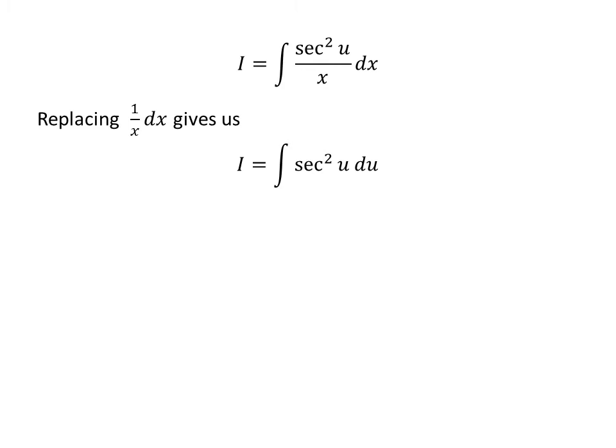So, I = ∫sec²u du. We know tan u is the antiderivative of sec²u. A video explaining the derivative of the tangent function appears in the upper right corner, with the link in the description section.